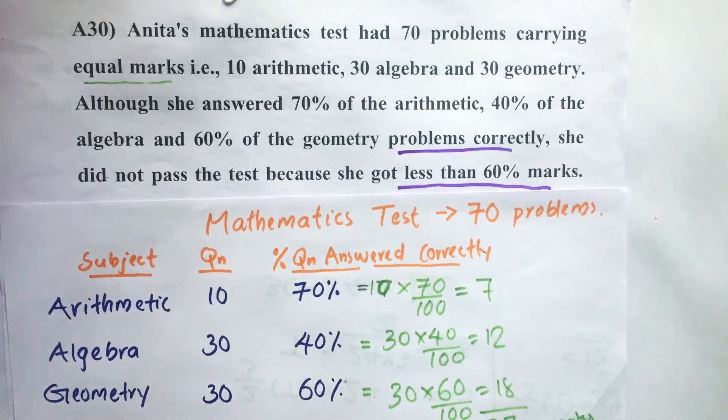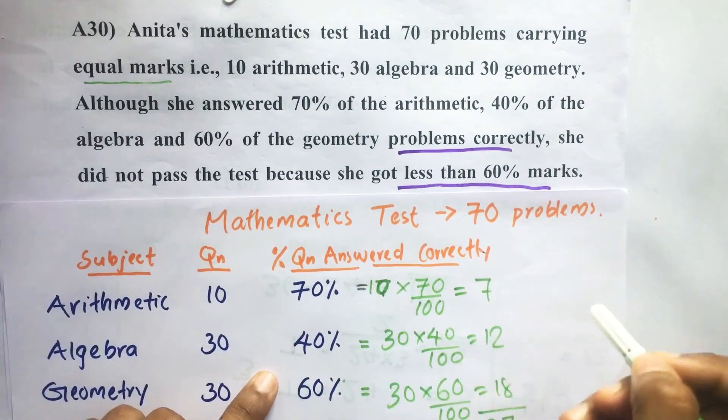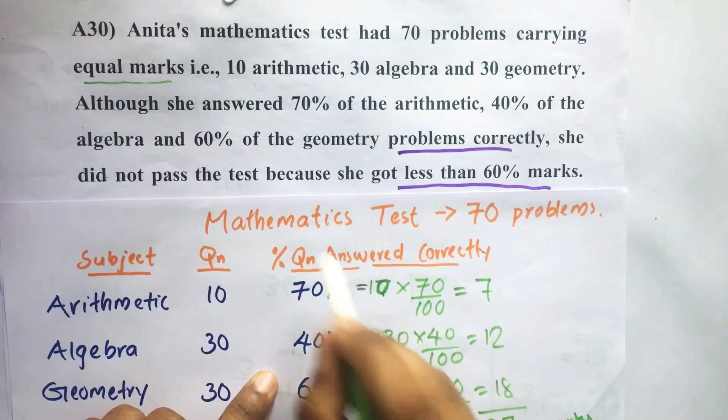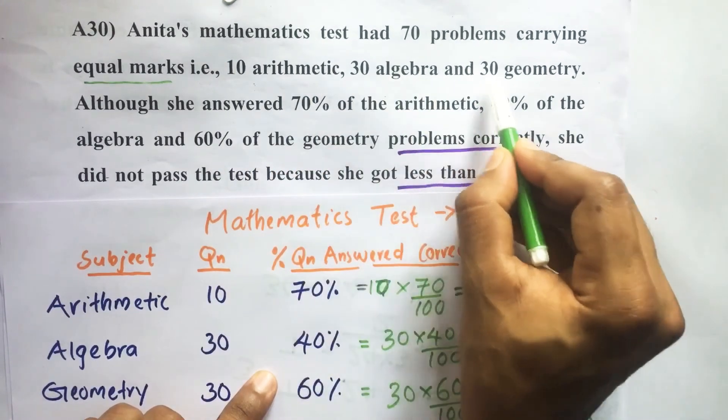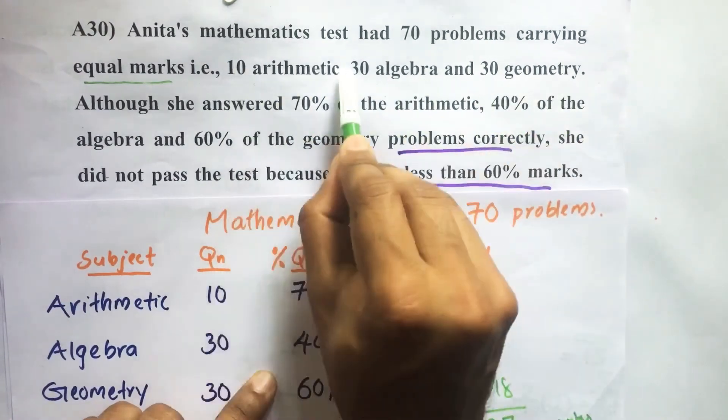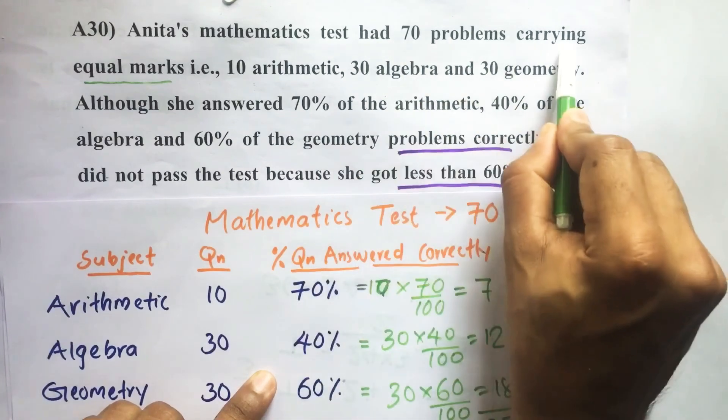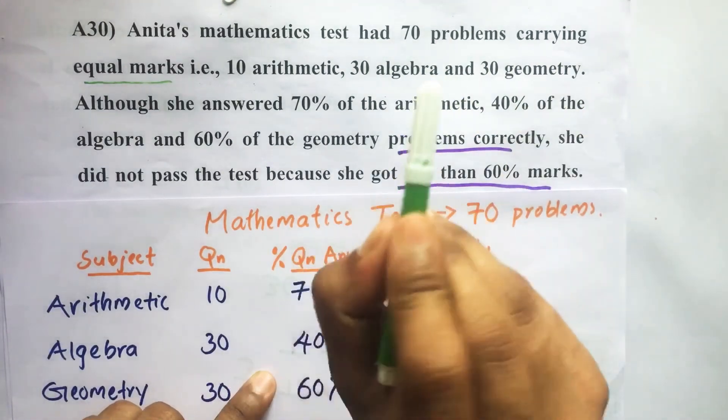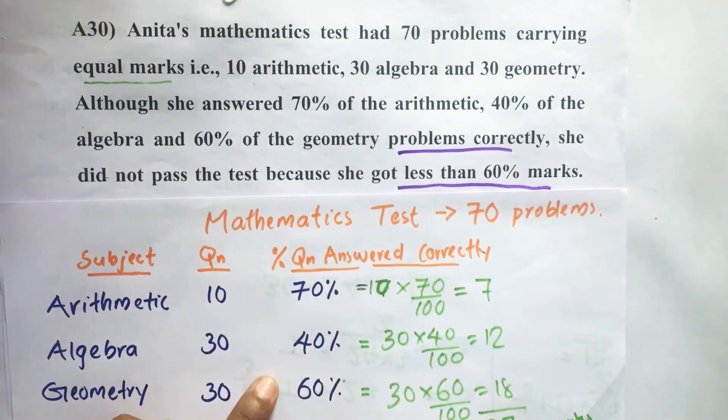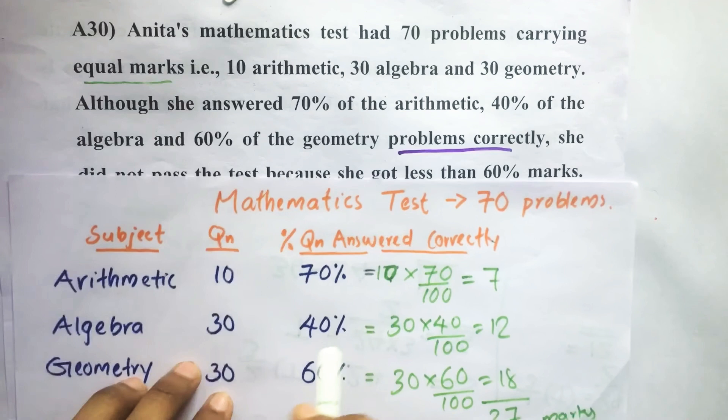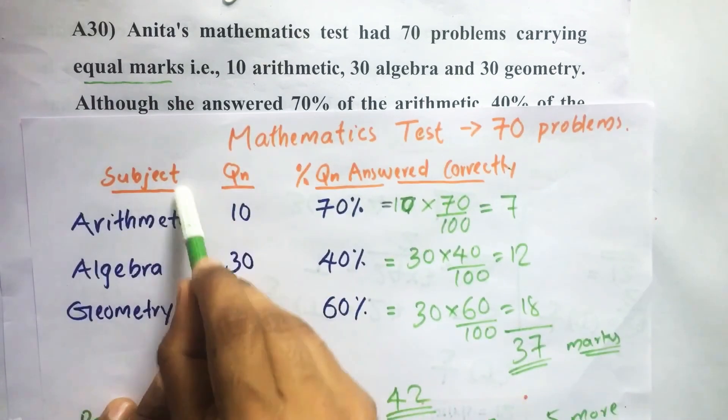So here, Anita's mathematics test contains 70 problems, and each problem carries equal marks. There are 70 questions total, meaning each question carries one mark.